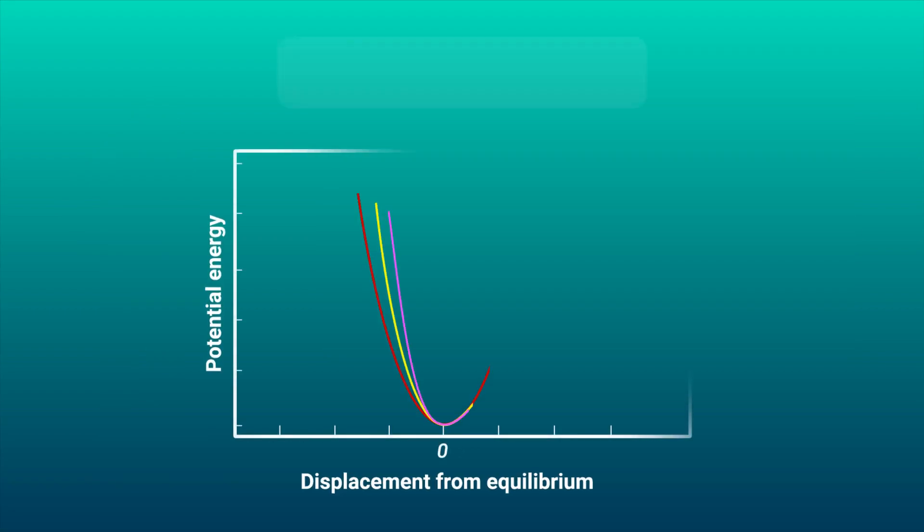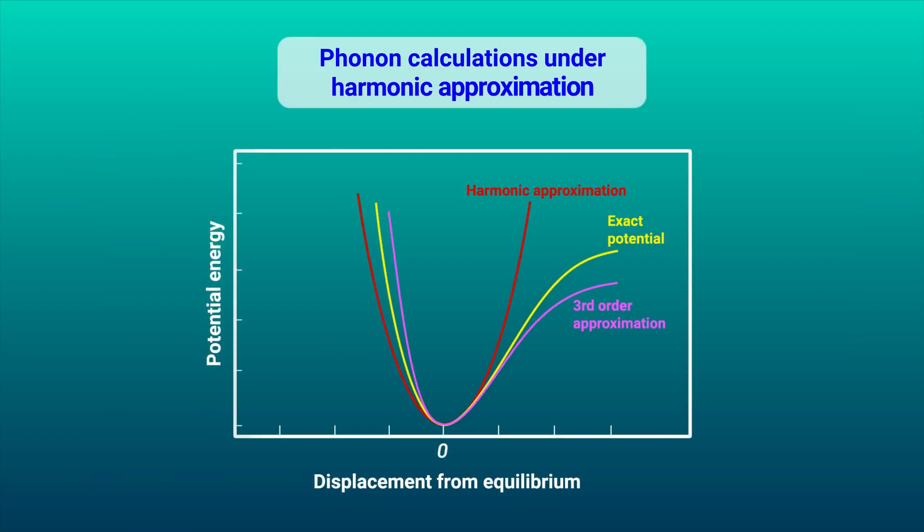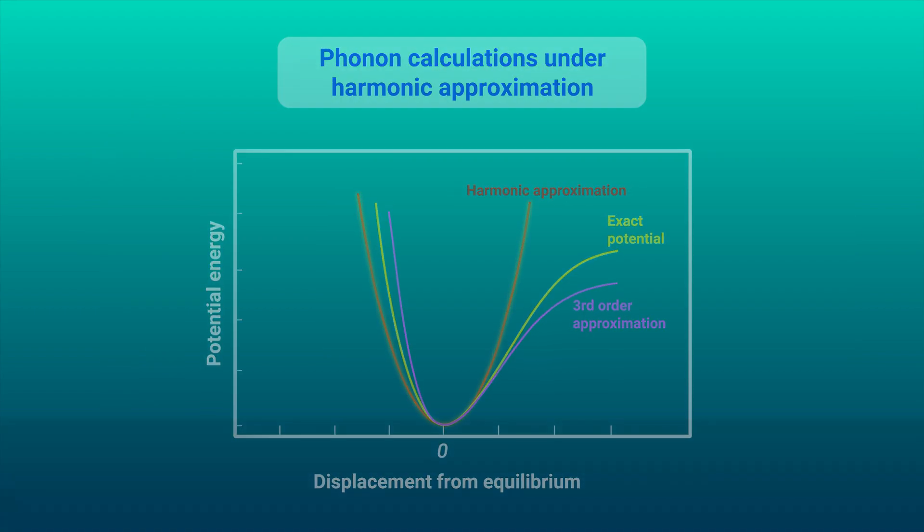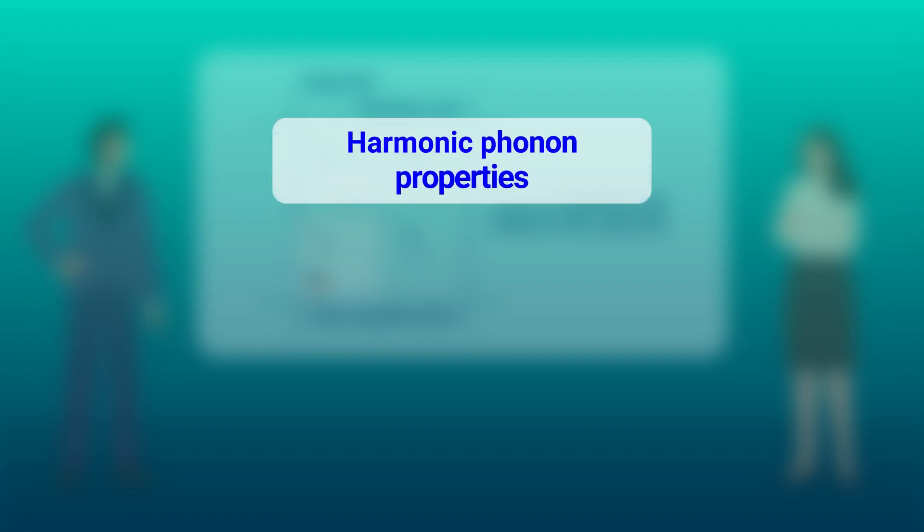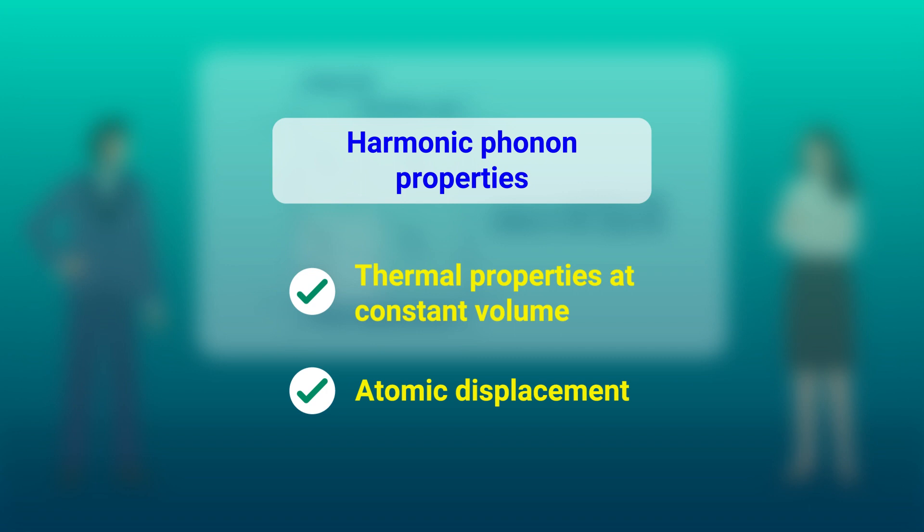The review first looks at phonon calculations under the harmonic approximation, showing how, using the finite displacement supercell approach and phonon coordinates, harmonic phonon properties like thermal properties at constant volume and atomic displacements are calculated.